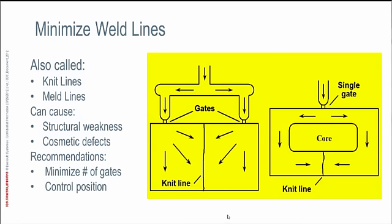The last thing I'd like to talk about when it comes to best practices in plastic part design is to minimize your weld lines — also referred to as knit lines or meld lines. They are phenomena that occur when two or more plastic flow fronts come together inside a mold cavity. Here on the left side of my graphic, you see a part with a runner system coming down into two gates. Just because I have two gates, that means two flow fronts, which means I'm going to have at least one major weld line in my part.